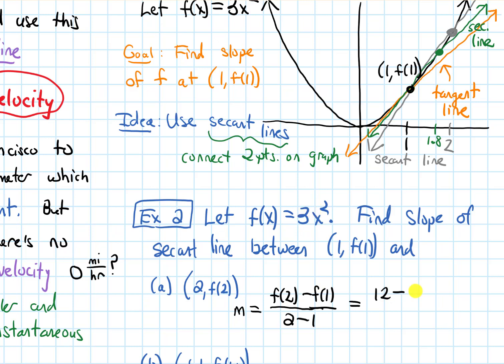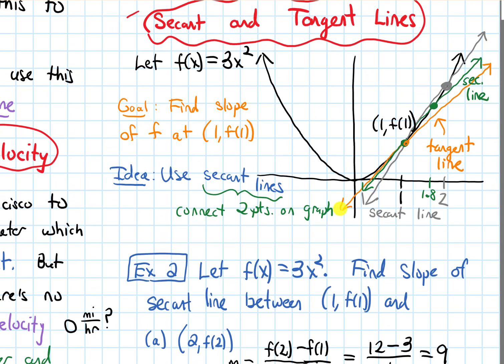If I plug 1 into the function, I get 3, and then over 1 on the bottom, which is 9. So that was the slope of this first gray secant line I had drawn. It's 9.